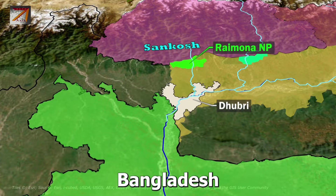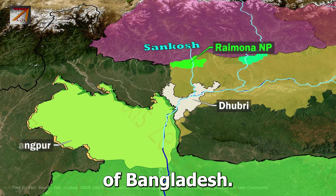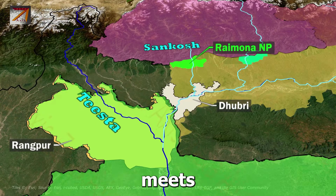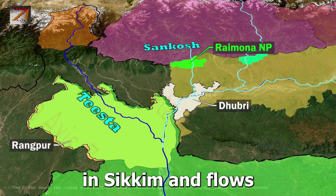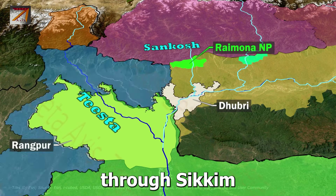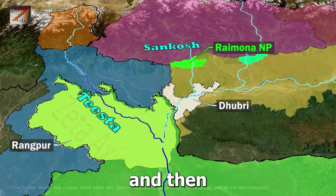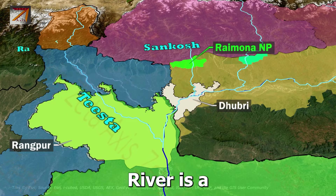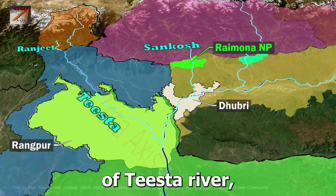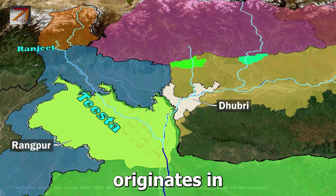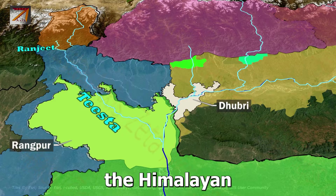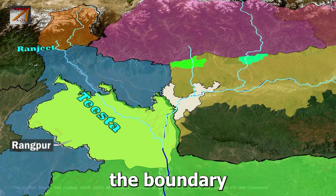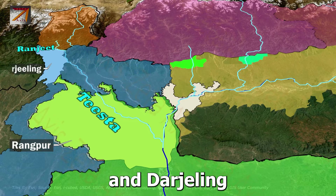From Dhubri, the Brahmaputra River enters Bangladesh. In Rangpur of Bangladesh, the Tista River meets Brahmaputra. The Tista River originates in Sikkim and flows through Sikkim and West Bengal. The Ranjit River is a major tributary of Tista, originating in the Himalayan mountains of West Sikkim and forming the boundary between Sikkim and Darjeeling district.